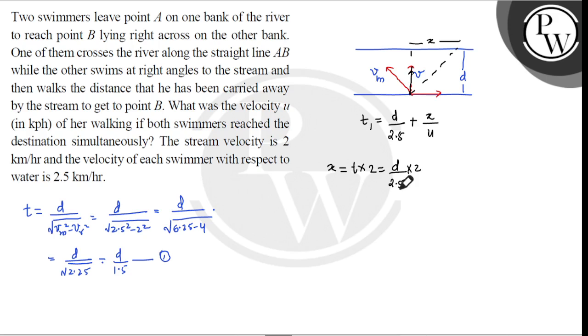So you have 4d upon 5. The total time equals d upon 2.5 plus d upon u. This should be equal to d upon 1.5. Canceling d from both sides, we get 4 upon 5u equals 1 upon 1.5 minus 1 upon 2.5.